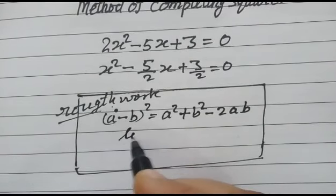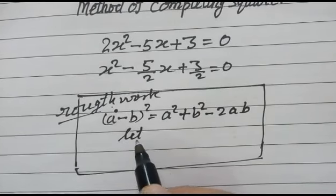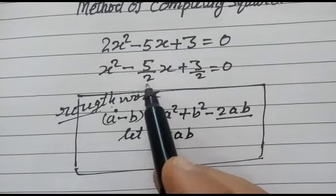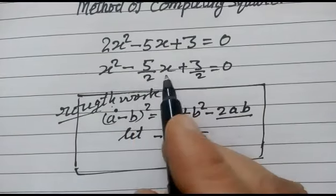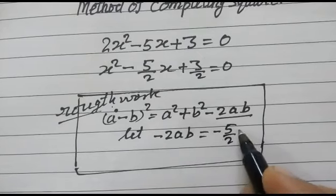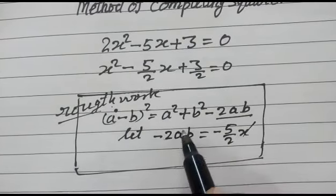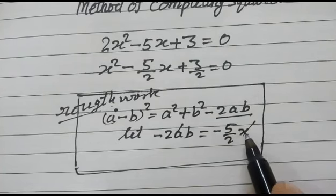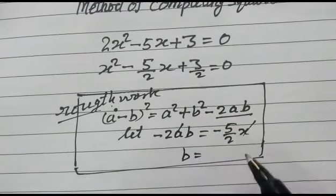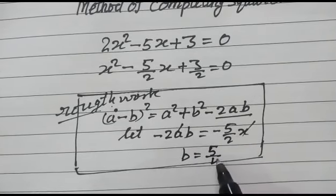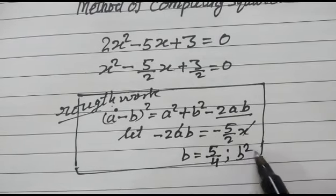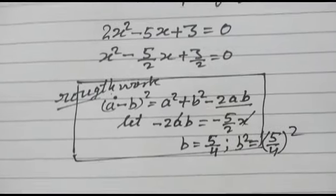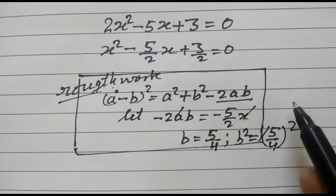Let, for some moment, we assume that minus 2ab is equal to minus 5/2 x. And let x equal to a, so a cancels with x. Then b will be equal to 5/4, or b² is equal to (5/4)². Please note, this is our rough work.